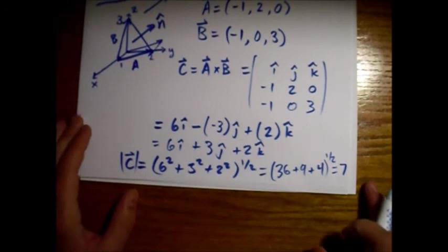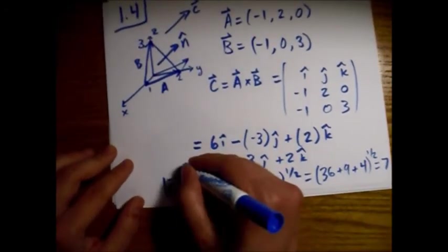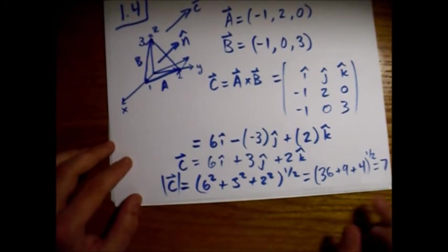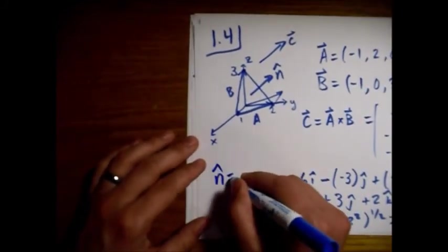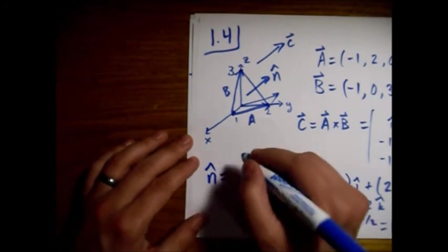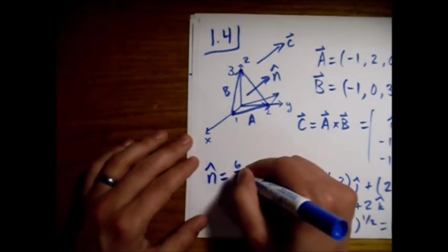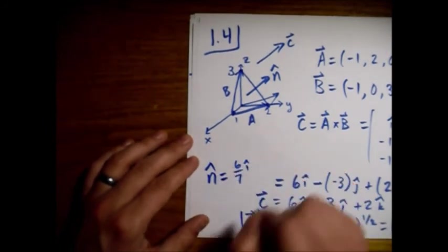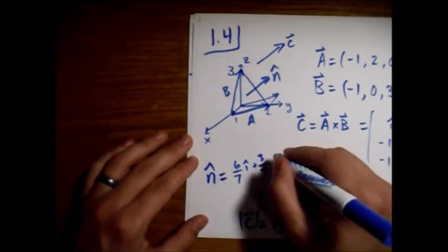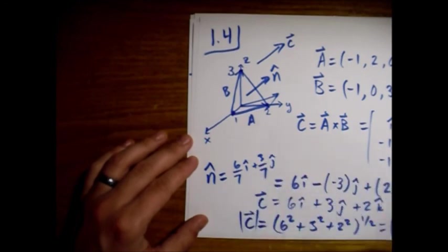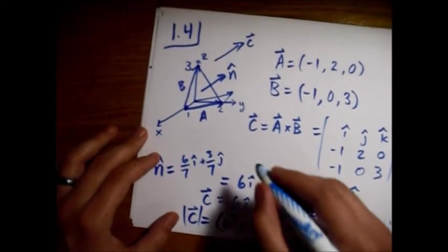So we just divide C here by its magnitude, and we'll get n-hat. So n-hat equals 6 over 7i plus 3 over 7j plus 2 over 7k.